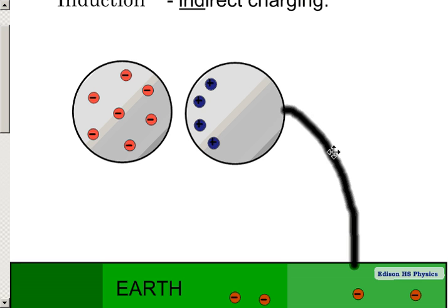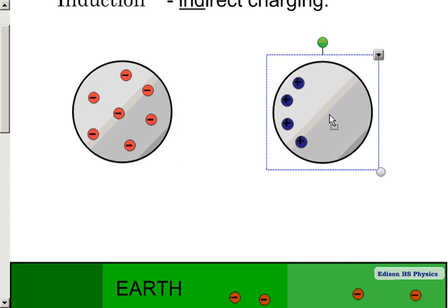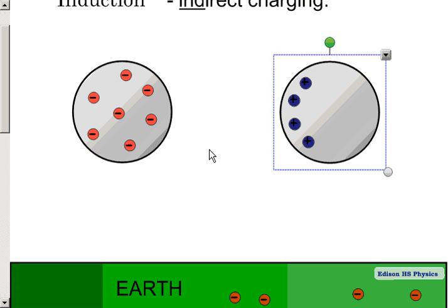So once that happens, we can remove that conducting wire there. And we can move the right-handed sphere away. And now it has a positive charge.